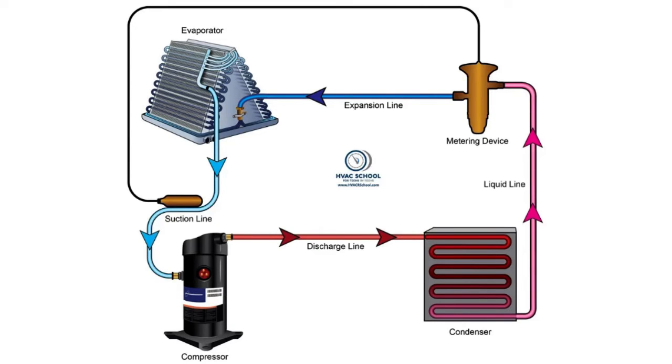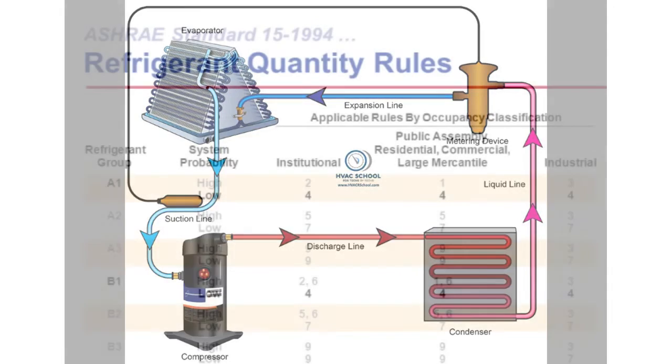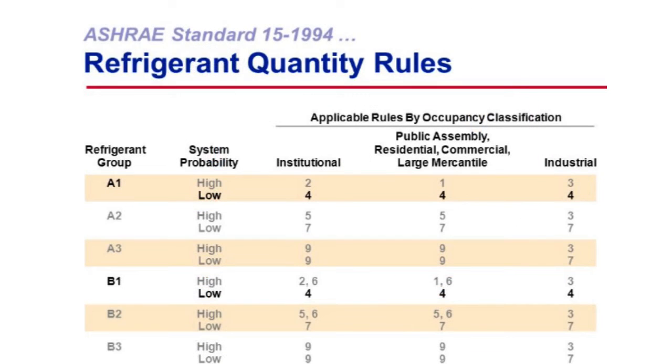Safety is paramount in HVAC design, and that's where ASHRAE Standard 15 steps in. It's the safety manual for refrigeration systems, providing guidelines to prevent accidents and ensure the secure operation of these systems.